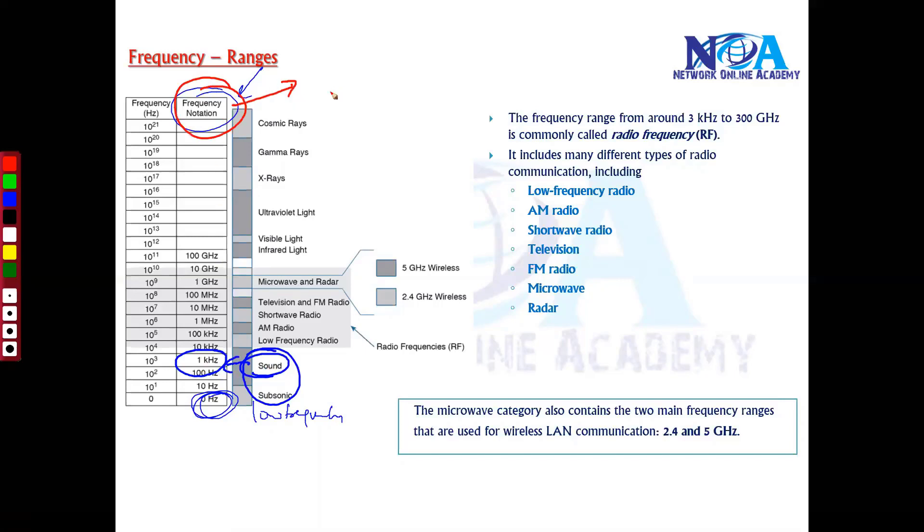When you talk about high frequencies, they include things like light, cosmic rays, gamma rays, x-rays, and UV rays. Visible light comes in this range. This table gives you the details of different frequency ranges. Mainly, when you talk about wireless options, we call them radio frequency signals.